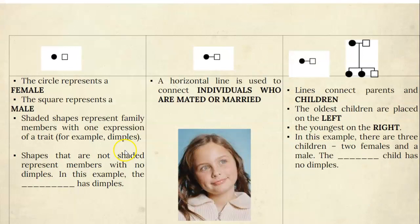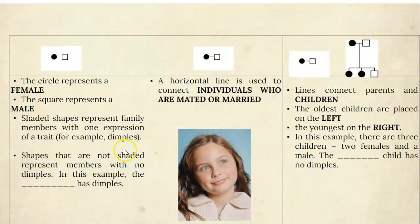Next we're going to look at individuals that are married or have mated. How do I know? Because there's a line connecting them. Now if you were looking at a double line, that would represent individuals who are related and who mated — so relatives had children. But for our purpose we're mostly going to see one horizontal line. Please write down that individuals who are mated or married are represented by a horizontal line.